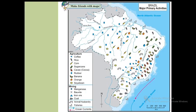We will now study the occupations in Brazil. First is agriculture. On this map you can see the different crops grown in Brazil: coffee, rice, corn (also known as maize), sugar cane, cocoa, rubber, and fruits like bananas, oranges and soya bean.